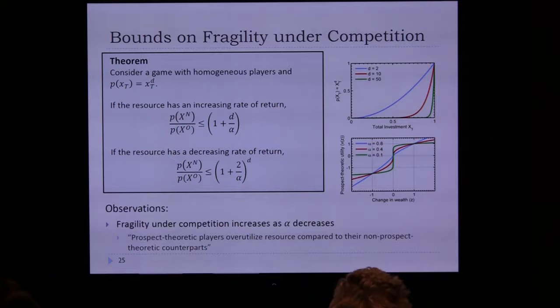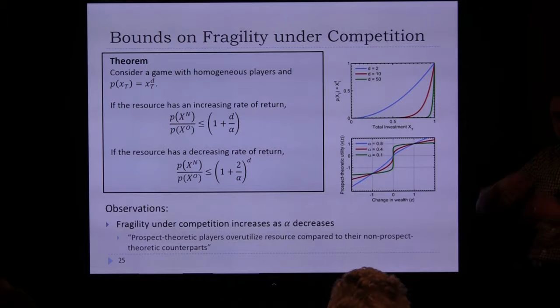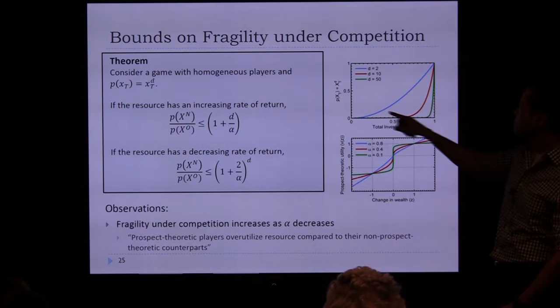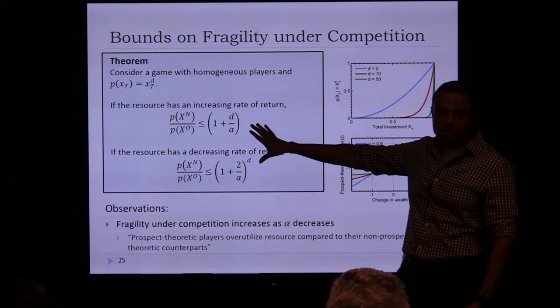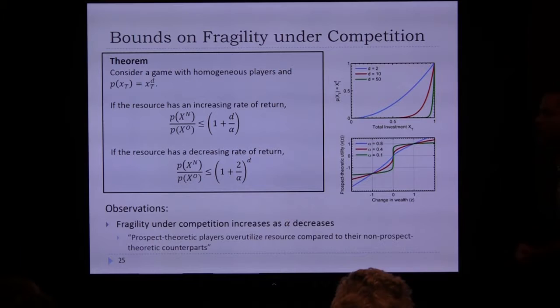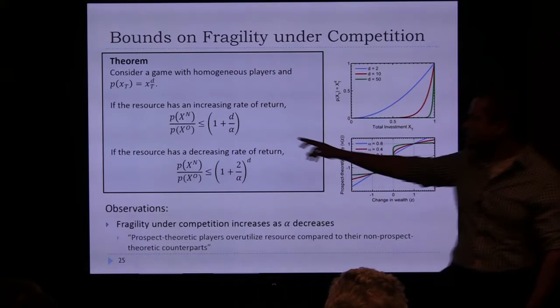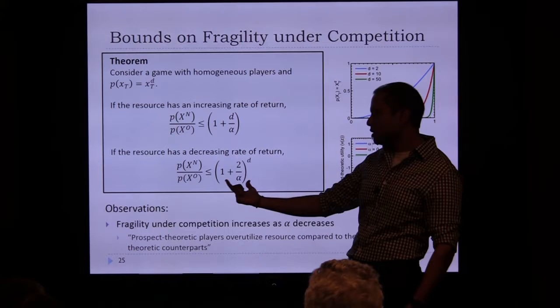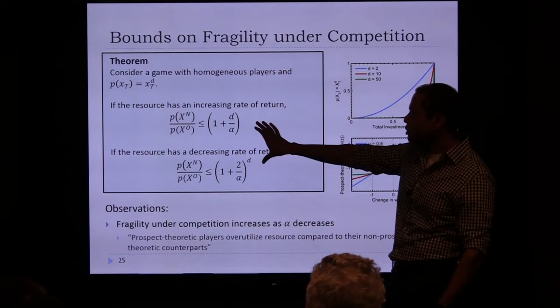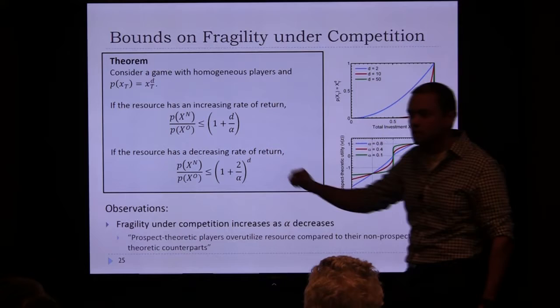Main result with monomial failure probability P(x) = x^D: for a resource with increasing rate of return, the fragility ratio is upper bounded by (1 + D/alpha). For a resource with decreasing rate of return, it is upper bounded by (1 + 2/alpha)^D. These bounds depend only on how convex the failure probability function is (parameter D) and how skewed people's value perceptions are (parameter alpha).